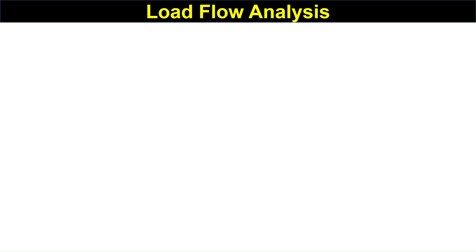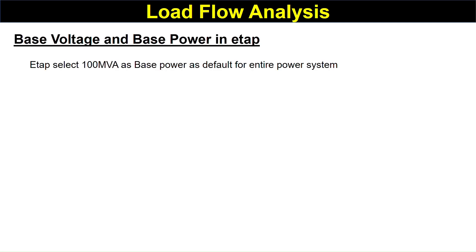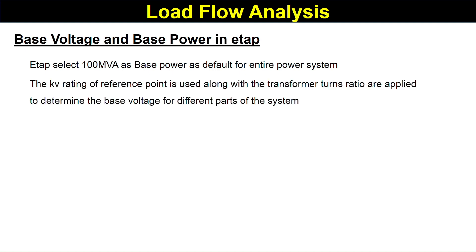Now, how do we select the base voltage and base power in the ETAP system? ETAP selects 100 MVA as the base power by default for an entire power system. The kVA rating of the reference point is used along with the transformer's turns ratio to determine the base voltage for different parts of the system.